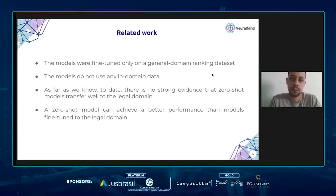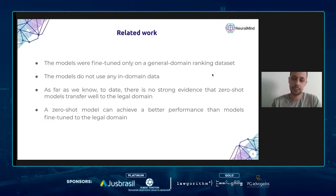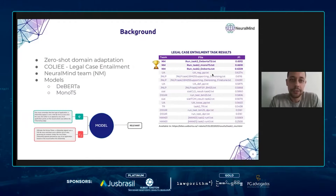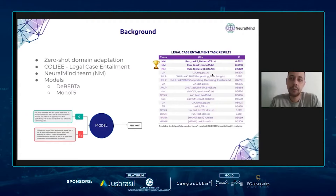The main contribution of this work is that we show, for the first time for the task of legal case entailment, a zero-shot model that performs better than models adapted to the legal domain. Zero-shot domain adaptation is when a model is able to solve a task in a target domain without receiving any training examples from that specific domain. In our case, the model has never seen text from the legal domain and was only trained on text from the general domain.